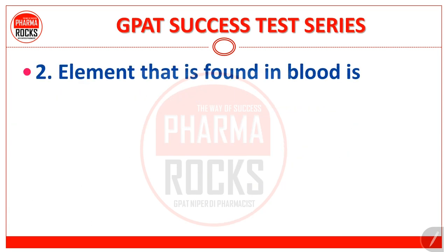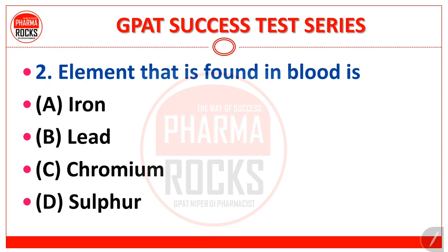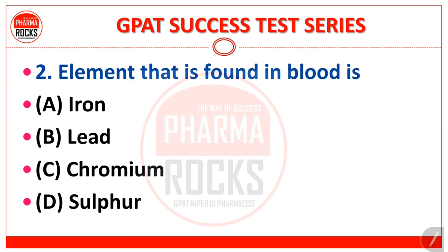Next, question number 2: the element that is found in the blood is — iron, lead, chromium, or sulfur? The correct answer is option A: iron. Blood ke andar jo element specially paaya jaata hai, uska sahi answer hai option A iron.